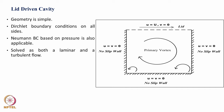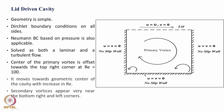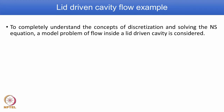Depending on the Reynolds number it may be laminar flow or turbulent flow. A primary vortex forms and there are vortices at the two corners. Depending on the Reynolds number, the primary vortex either stays at the center or moves to one corner. Secondary vortices appear very near the bottom right and left corners. The intention of this week's class is to completely understand the concepts of discretization and solving the Navier-Stokes equation using the lid driven cavity as a model problem.